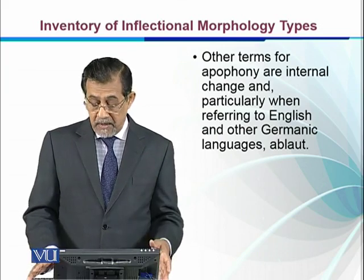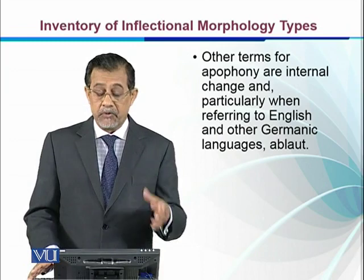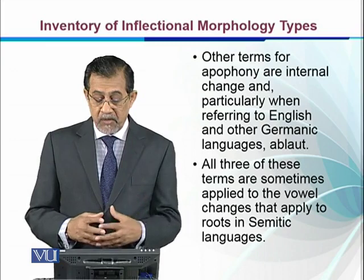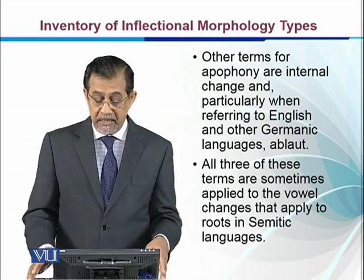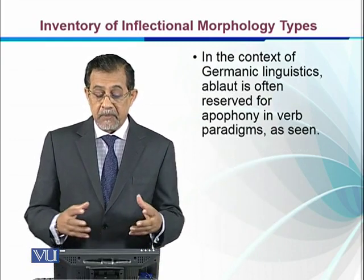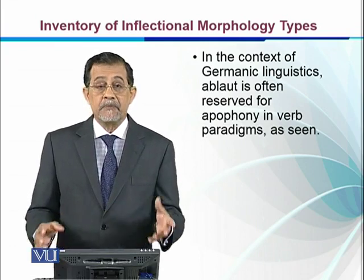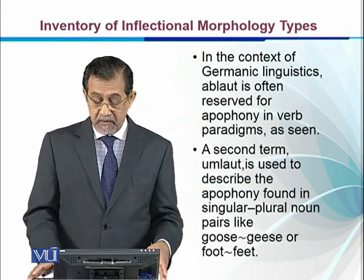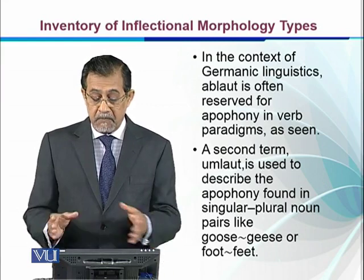Ablaut is another case of vowel change. All three terms — apophany, ablaut, and umlaut — are sometimes applied to vowel changes in roots, especially in Semitic languages. In Germanic linguistics, ablaut is often reserved for apophany in verb paradigms, meaning the different forms of the verb as we have just seen.